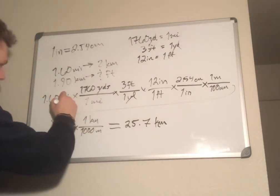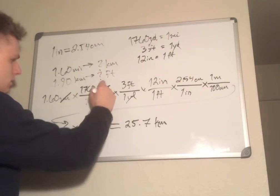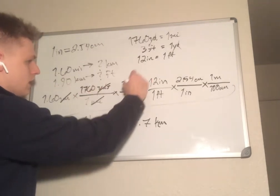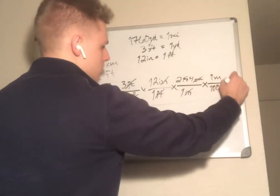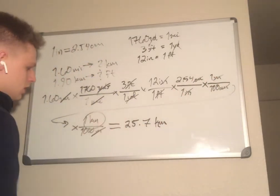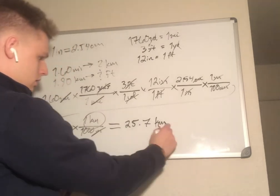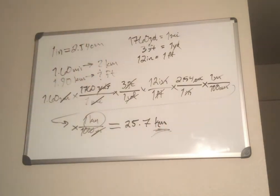As you can see, each unit cancels with the next: miles cancel, yards cancel, feet cancel, inches cancel, centimeters cancel, meters cancel — we just keep going until we get kilometers at the very end. That's our unit, so Part A is solved.